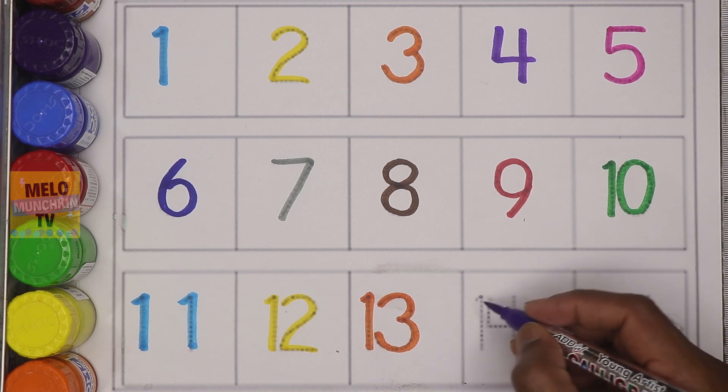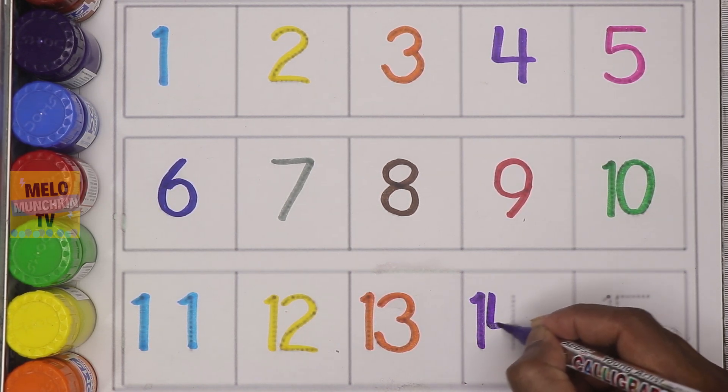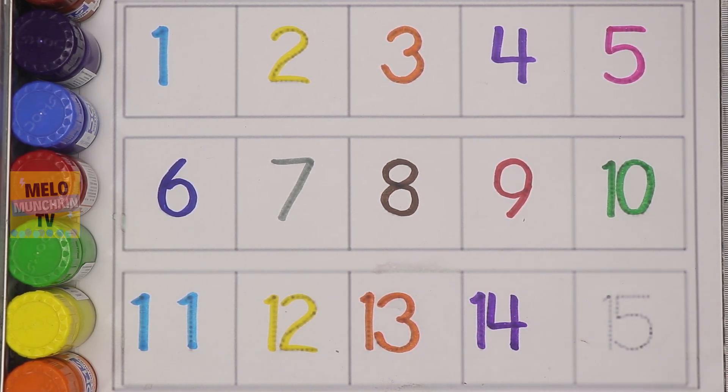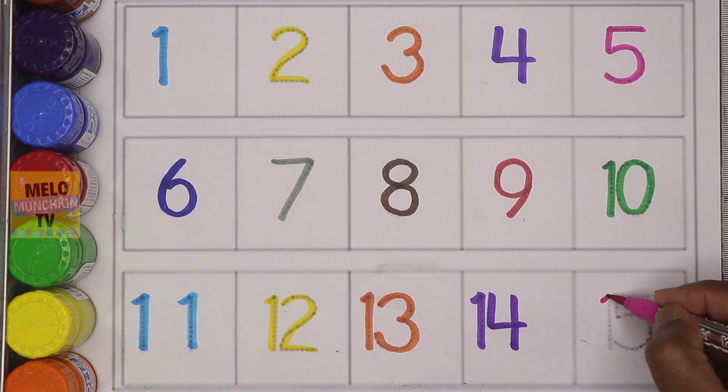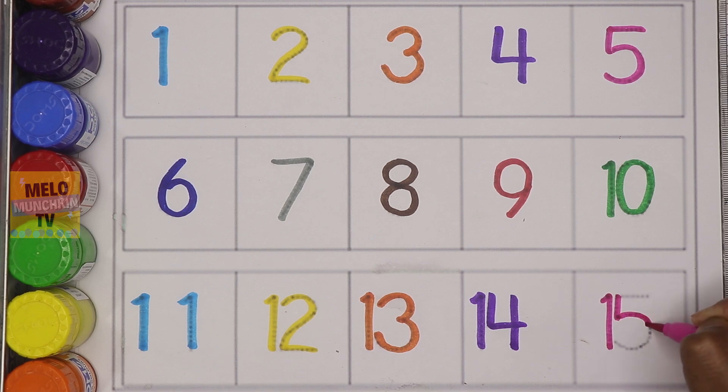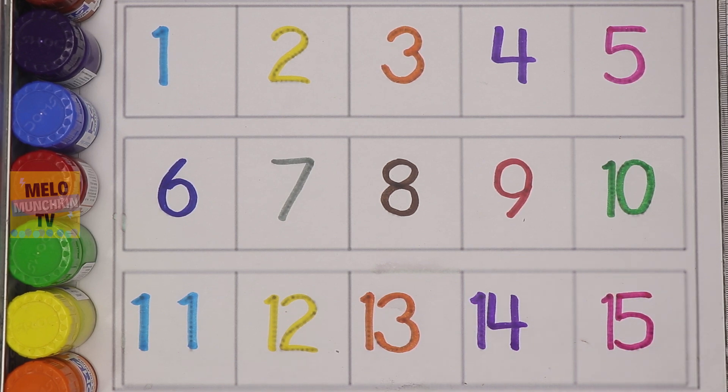Purple color - fourteen: F-O-U-R-T-E-E-N, fourteen. Pink color - fifteen: F-I-F-T-E-E-N, fifteen. So we have completed our numbers from 1 to 15!